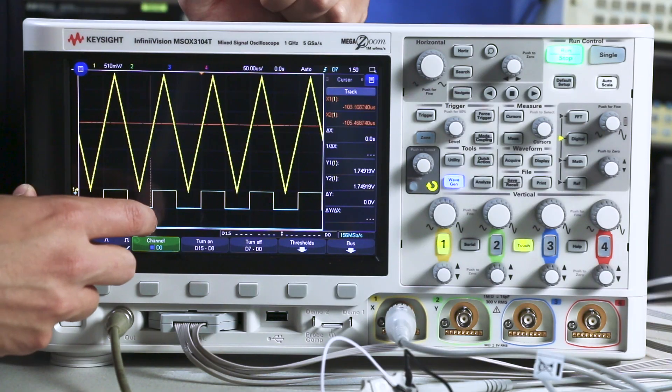If I move this to a rising edge of my signal, you can see that my analog channel is right around 1.5 volts.